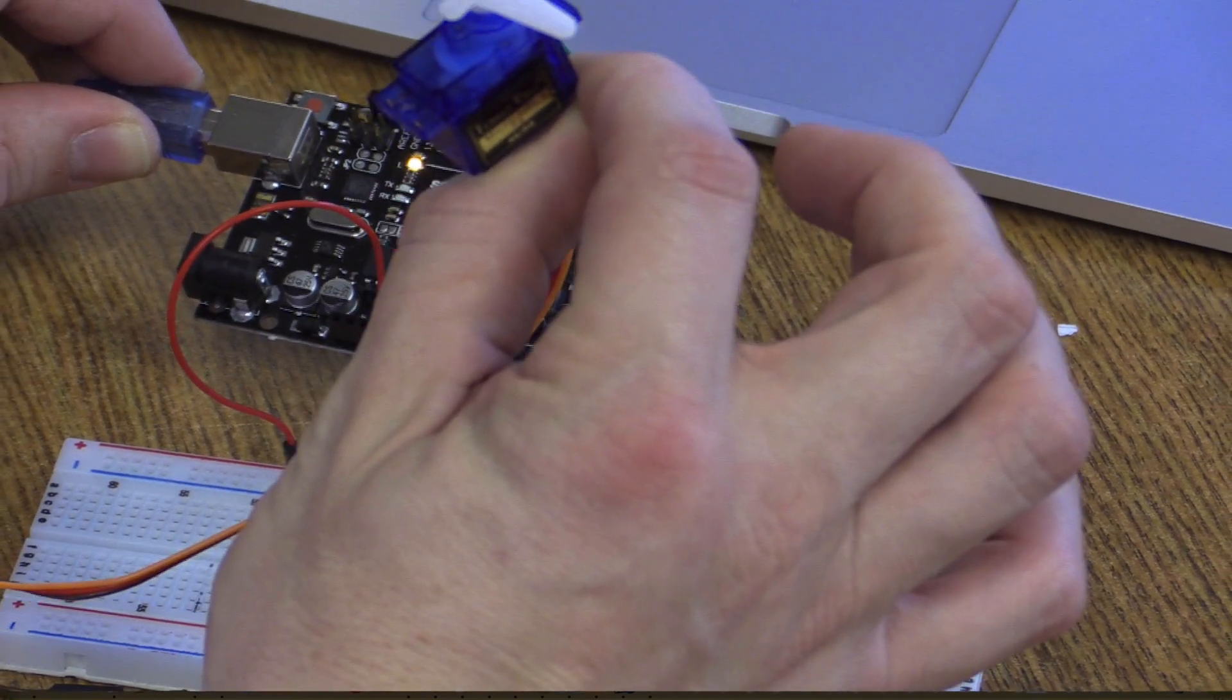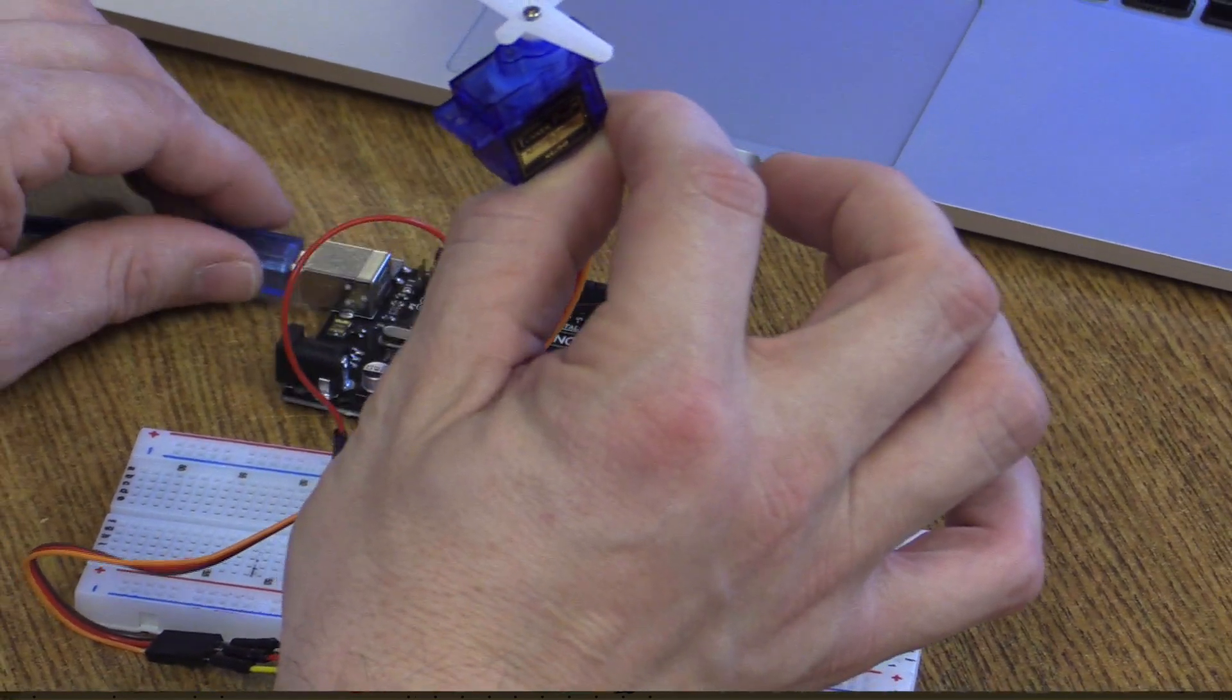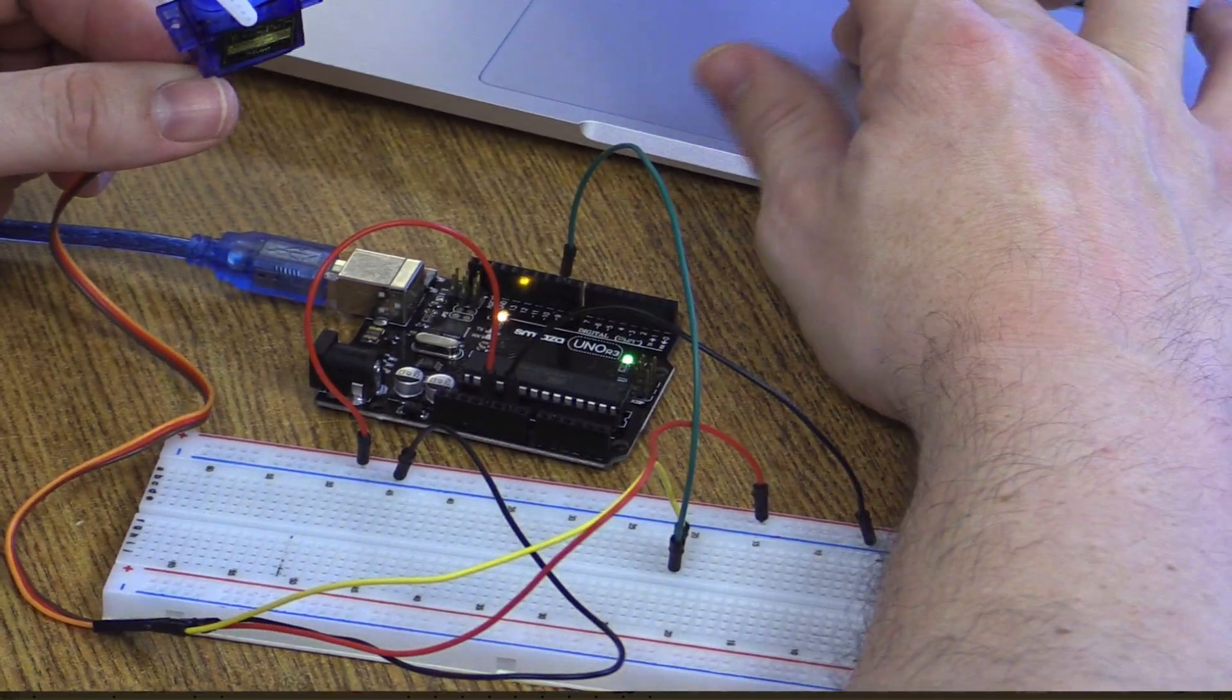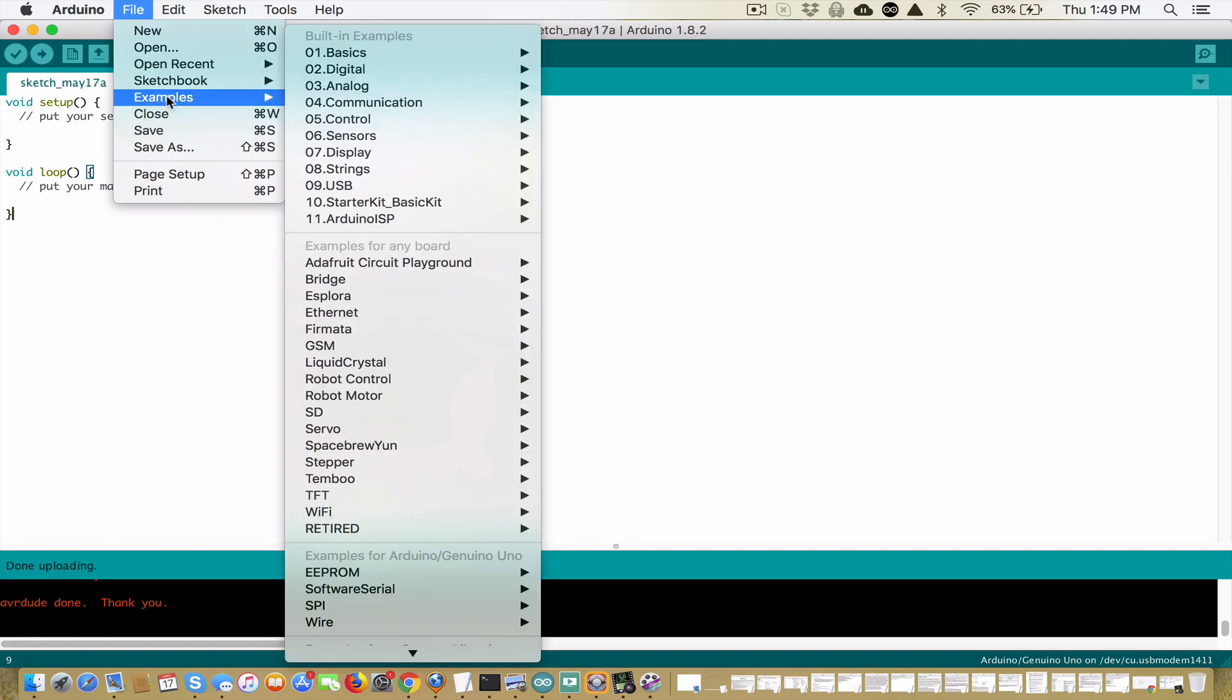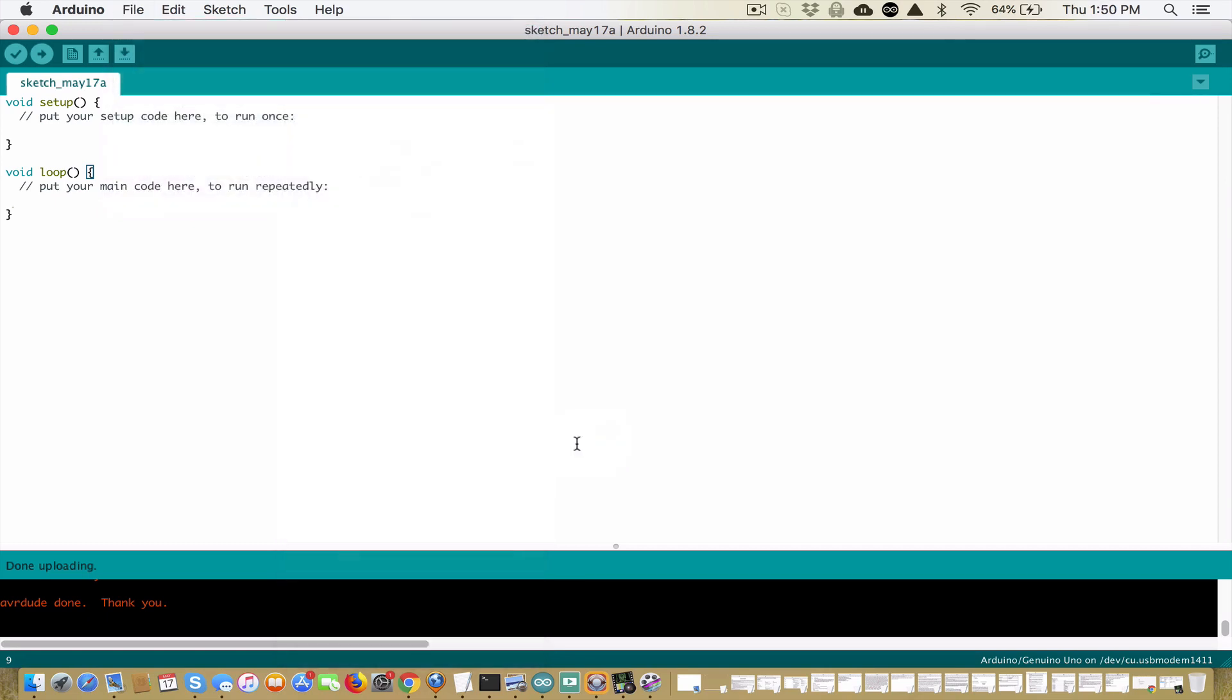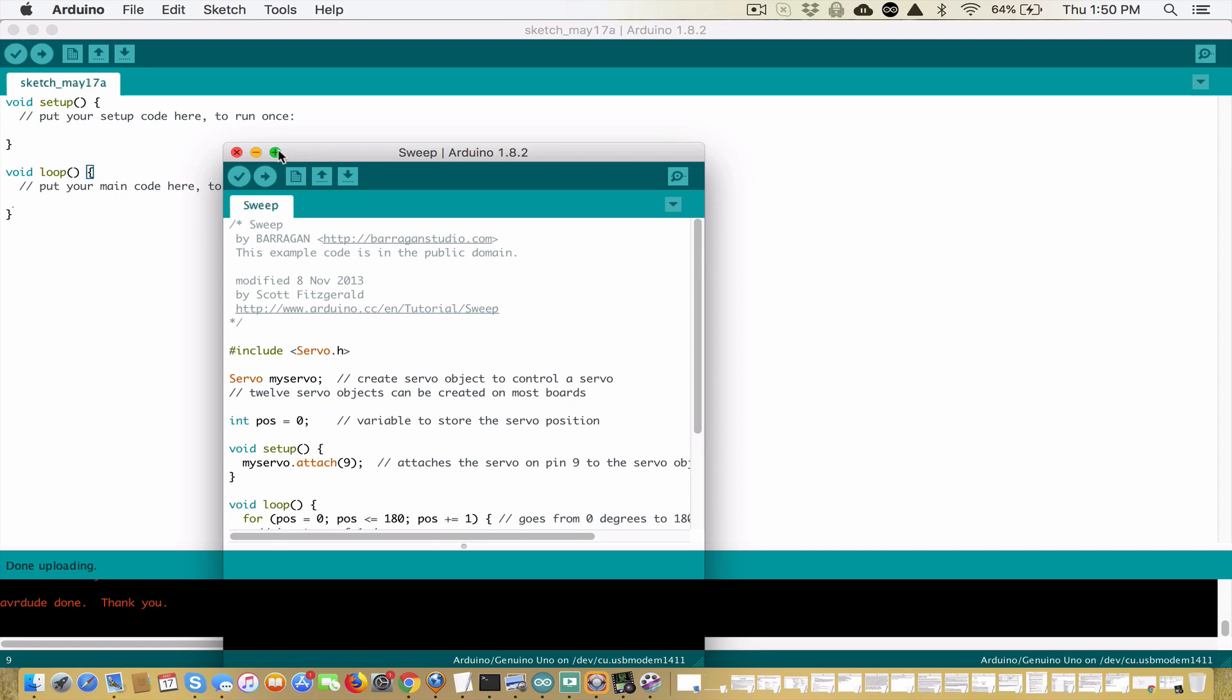So now we're going to go in, we're going to get the standard code from the Arduino IDE. And we're going to make sure that our servo works. So we go into Arduino, file, examples, and all the way down here, you'll see servo. And the one we're looking for is sweep. So let's open that code up.